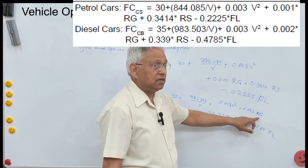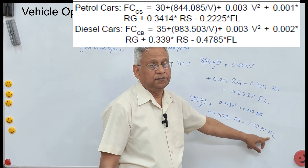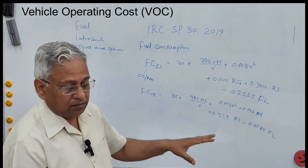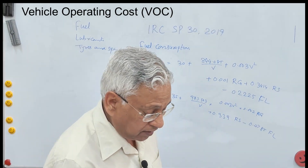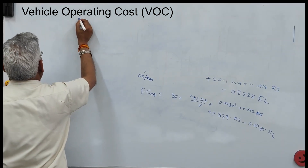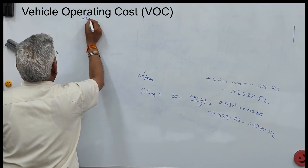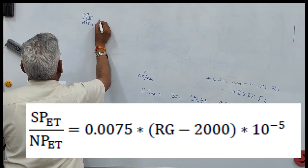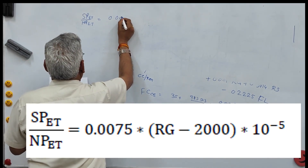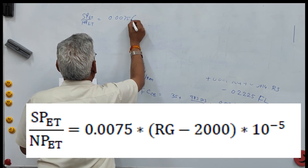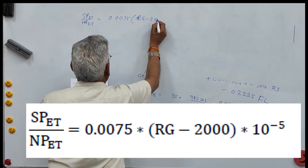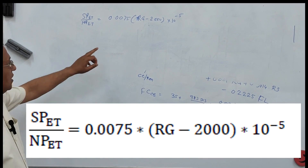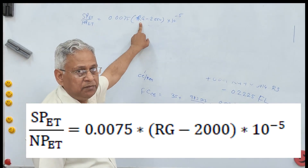The parameters have the same meaning: speed in km/h, roughness Rg in millimeters per kilometer, rise Rs and fall FL in meters per kilometer. Similar equations are given for other components of the VOC, like spare parts: SP_ET upon NP_ET = 0.00710.75 × Rg × 10⁻⁵, where Rg is roughness in millimeters per kilometer.